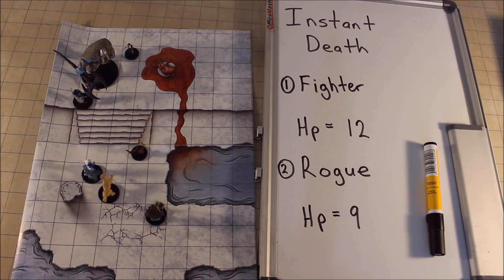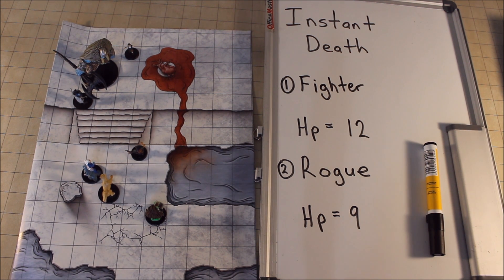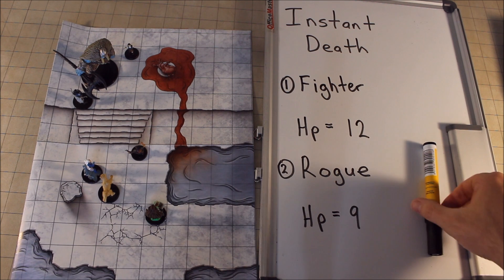I'm going to give you an example so you can see how it works. We have a fighter and a rogue engaged with a frost giant. It's the frost giant's turn — the frost giant swings its axe at the rogue, strikes it, and does a total of 18 points of damage. So what happens?